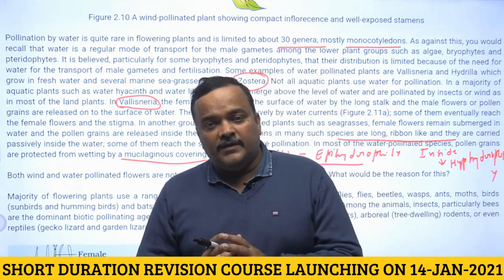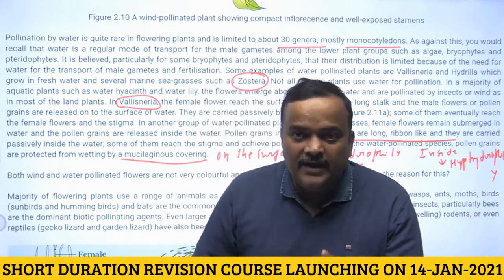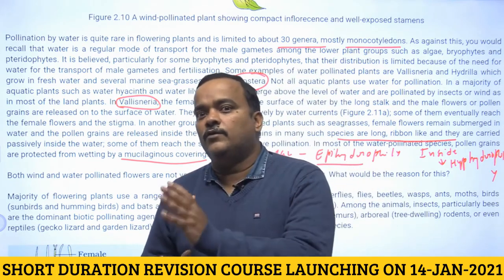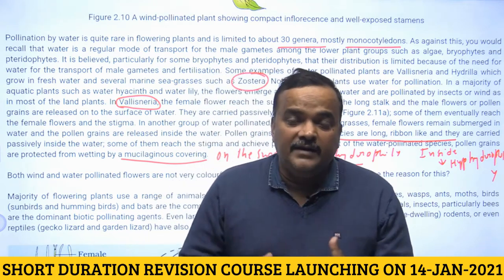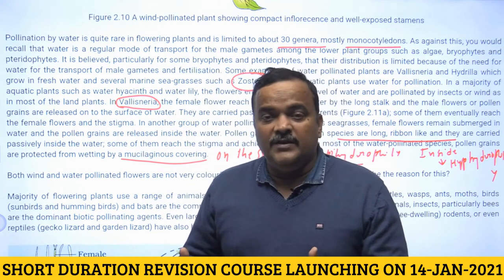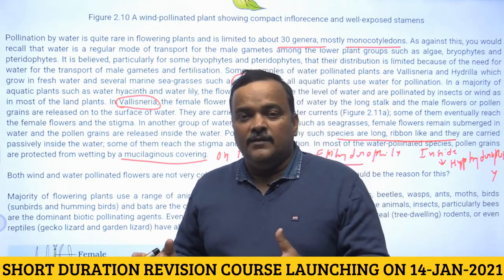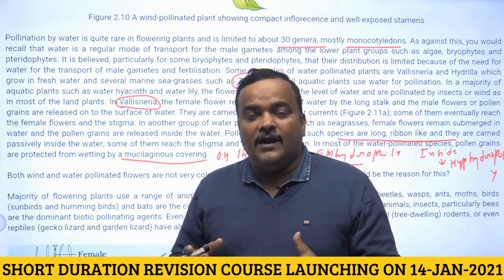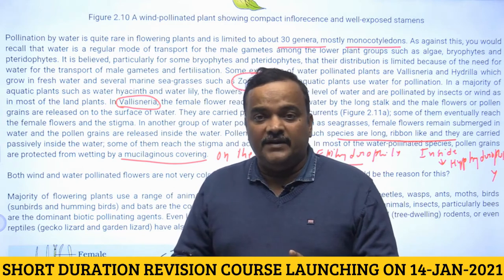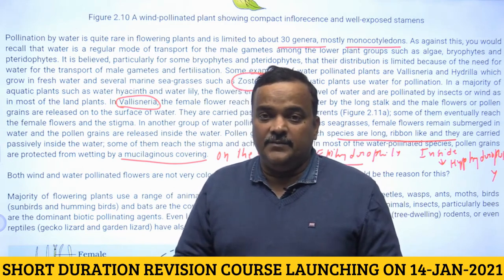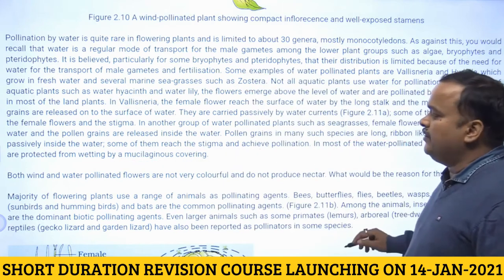An important point: it is not necessary that every aquatic plant is pollinated by water. Many aquatic plants like Alisma and Nymphaea are pollinated by insects or wind. So it is not mandatory that every aquatic plant will be pollinated by water.